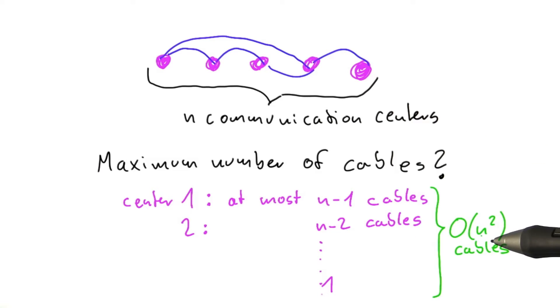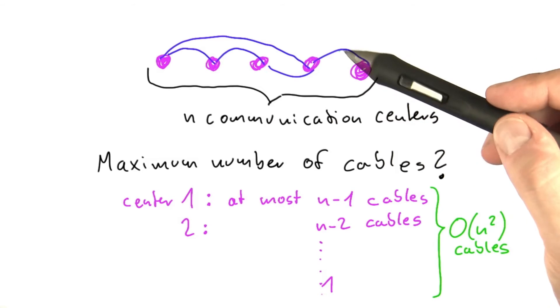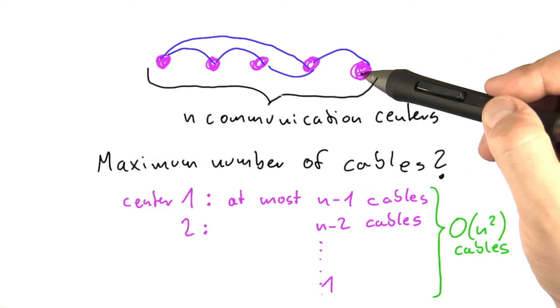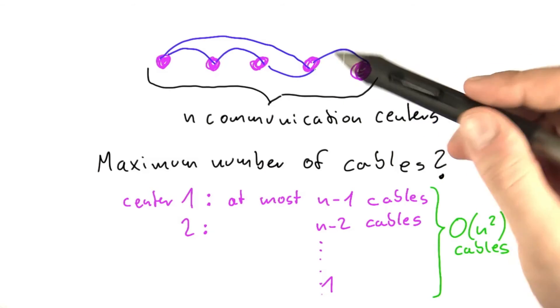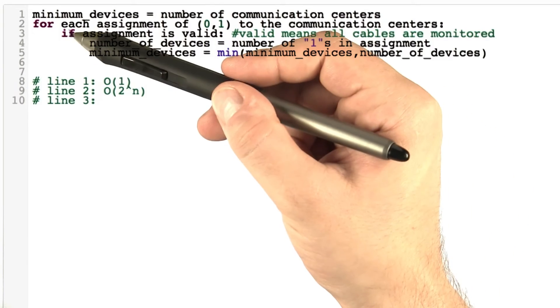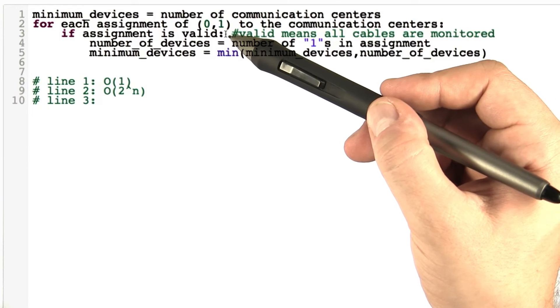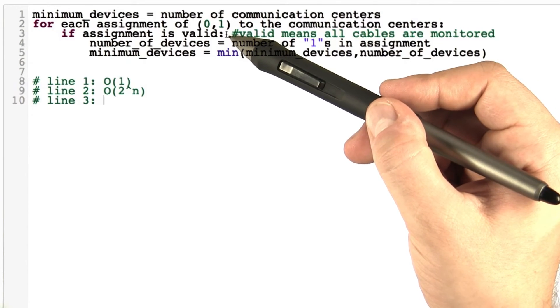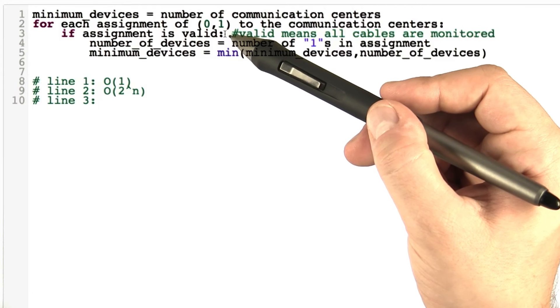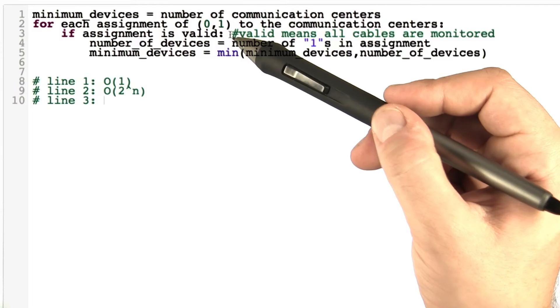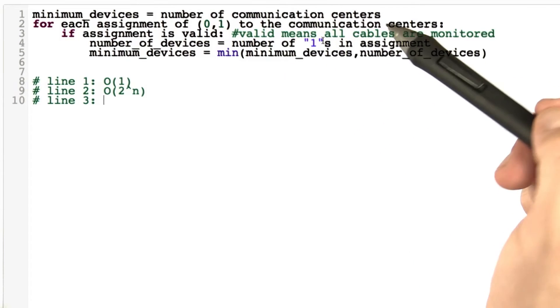The worst case running time for checking if a given assignment is valid means going through O(n^2) different cables and then for each of those cables checking if one of the communication centers that it's attached to has been assigned a 1. Now to figure out the running time of this line here, of course we first know it's O(n^2). And then the question is how much time do we need to check an individual cable? But for now, I think without further discussion, we can assume that it's constant time because it's just connected to two communication centers.